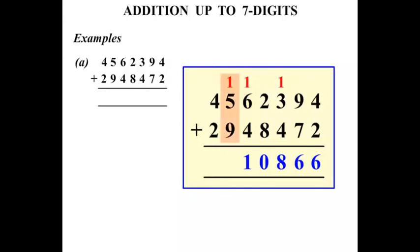1 plus 5 is 6 plus 9 is 15. So we put the 5 down and carry the 1. 1 plus 4 is 5 plus 2 more is 7. So our answer there 7,510,866. Terrific.